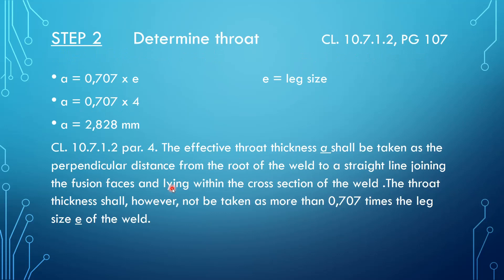Step number two: we want to determine the throat. We are directed to clause 10.7.1.2, also found on page 107. I've taken only the relevant paragraph — paragraph number four. It states: the effective throat thickness, denoted by 'a', shall be taken as the perpendicular distance from the root of the weld to a straight line joining the fusion faces, lying within the cross section of the weld.